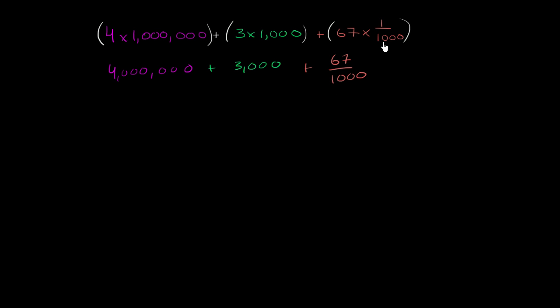And we can represent this literally as 67 thousandths. Or we could represent this as 60 over 1,000 plus 7 over 1,000. And what's 60 over 1,000? Well, 60 over 1,000 is 6 hundredths.